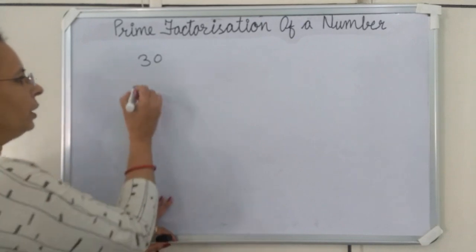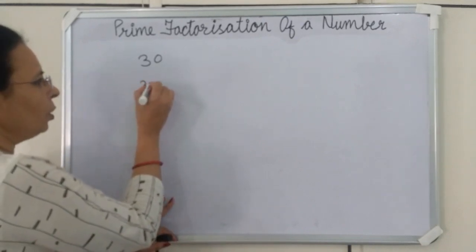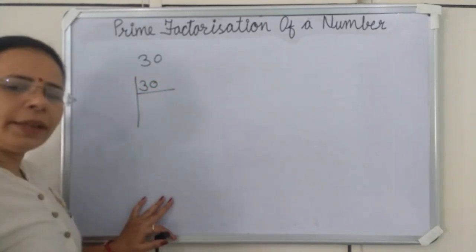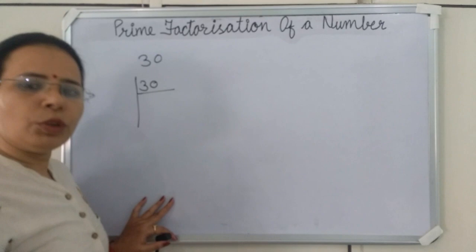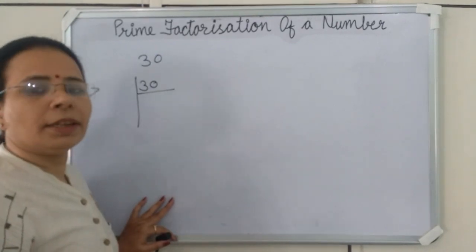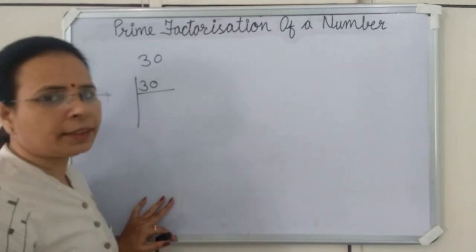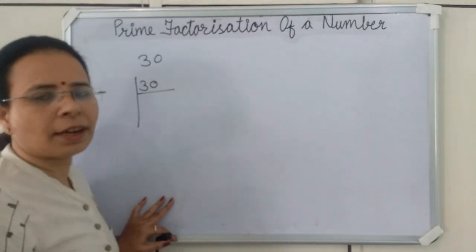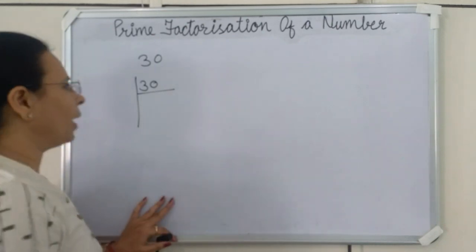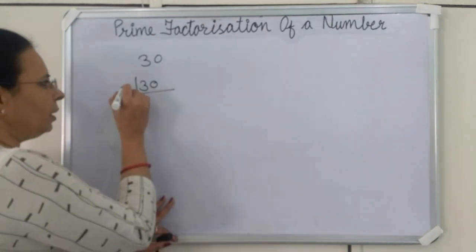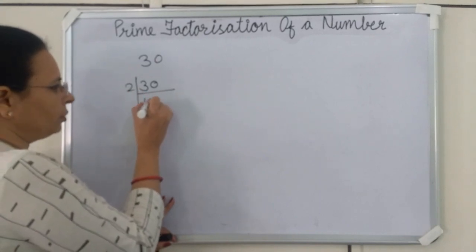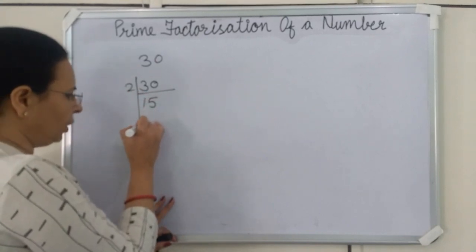So we will divide 30 by the smallest prime number. Which is the smallest prime number that exactly divides 30? We will divide 30 by 2. We get 15.